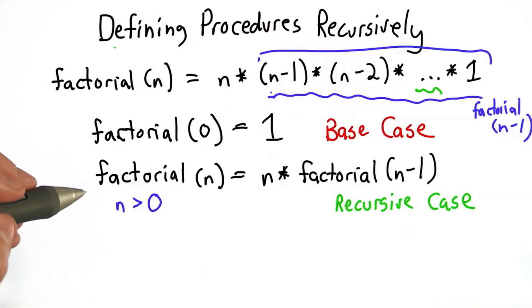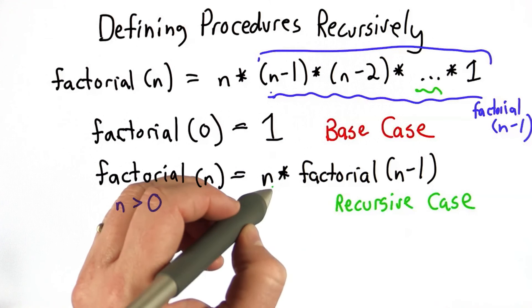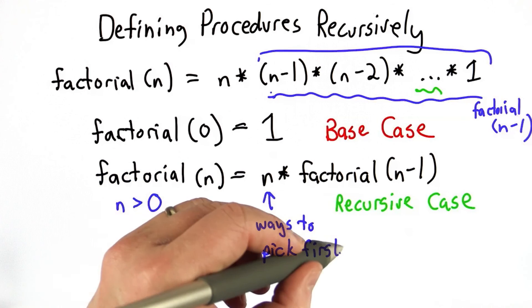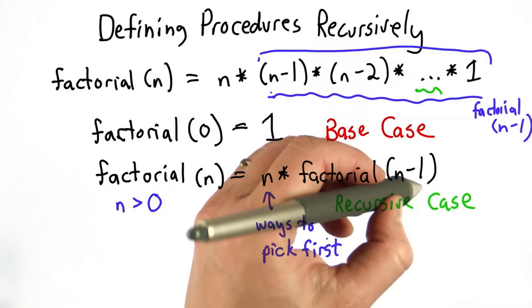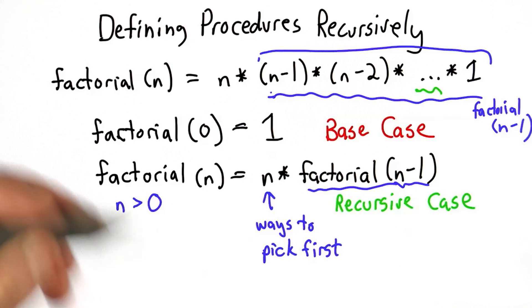And this definition matches our intuition well, if we think about factorial meaning the number of ways to arrange n objects. This corresponds exactly to the way we think about this, that we have n ways to pick the first item. And once we pick the first item, we have n minus 1 items left, and factorial of n minus 1 gives us the number of ways to arrange the remaining n minus 1 items.